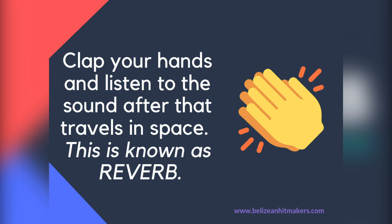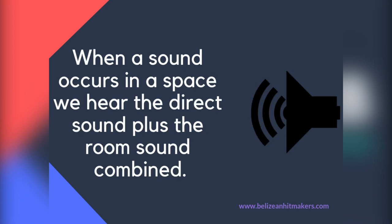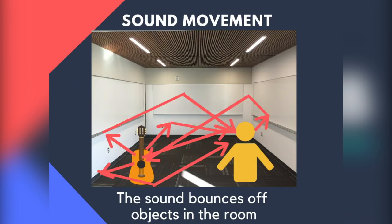Listen to the sound after the clap — that little ear of sound is known as reverb. When a sound occurs in a room or a space, we hear the direct sound plus the room sound, and that combination of what we hear is what we call reverb. This diagram shows the instrument and the listener inside the room, so the sound bounces off of everything before it reaches us.